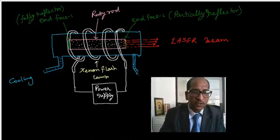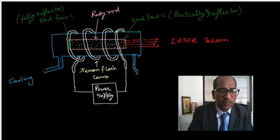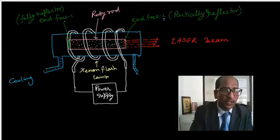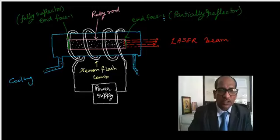Here you can see the pink color is the ruby crystal and this is a container for cooling purposes. Here you can see two mirrors - one is partially reflecting and this is fully reflecting. The helical shape is the xenon flash lamp power supply. This is the laser light output.